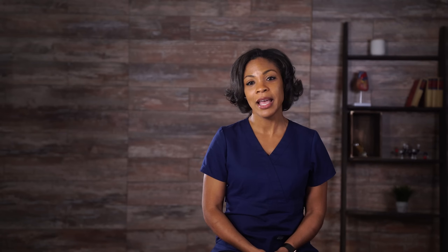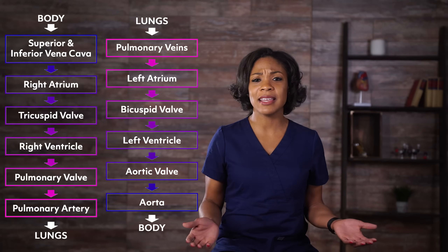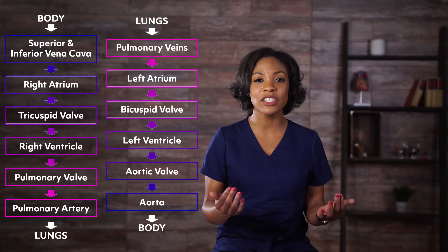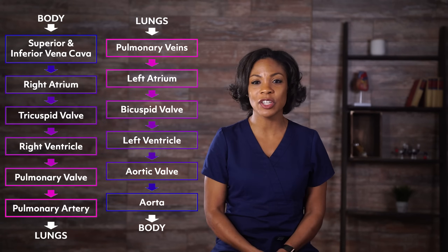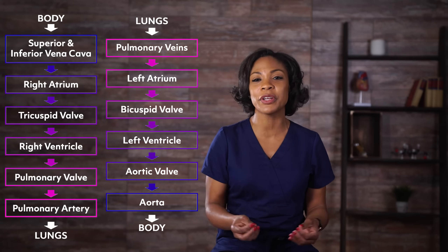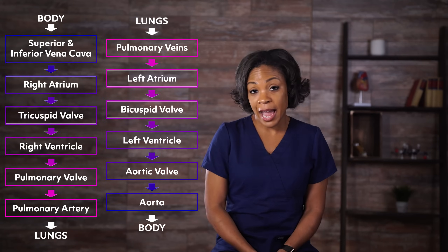Oxygenated blood is sent to the tissues to distribute oxygen and returns in veins to the SVC and the IVC to be re-oxygenated. As you can see, the heart and circulatory system is just a large closed circuit pump.